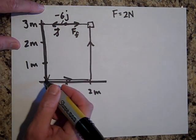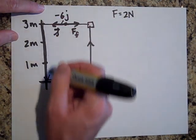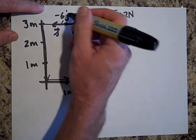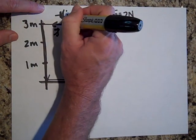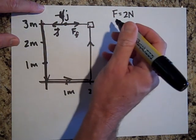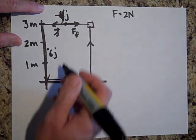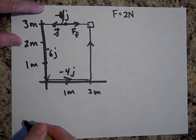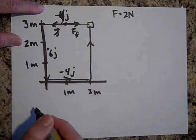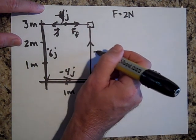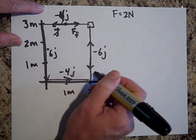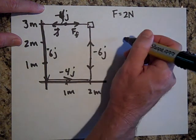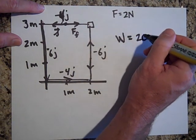Going down the next side: 2 N × 3 m = −6 joules. Across the bottom: 2 N × 2 m = −4 joules, because friction is to the left and displacement is to the right. Back up: 2 N × 3 m = −6 joules, because friction is downward and displacement is upward. Total work done around the closed path: −4 + (−6) + (−4) + (−6) = −20 joules.